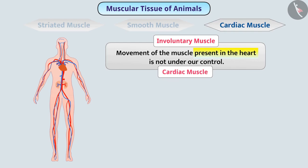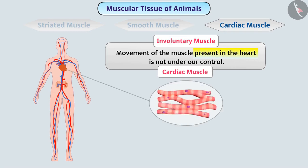When cardiac muscle is observed with the help of a microscope, alternate bands of dark and light colors are observed. The cells of this muscle are cylindrical, branched, and uninucleate.